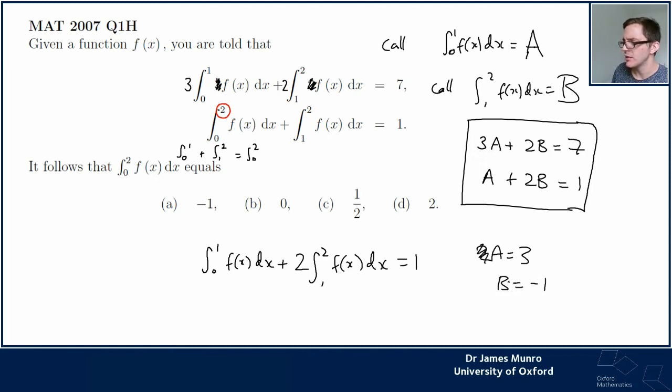Slight panic because actually I don't want A or B. I don't want either of these integrals. I want the value of the integral from 0 to 2 of f(x)dx. Well, again, I suppose I'm using this trick that the integral from 0 to 2 is 0 to 1 plus 1 to 2. I want A plus B, that's 3 minus 1, that's 2, which is D.